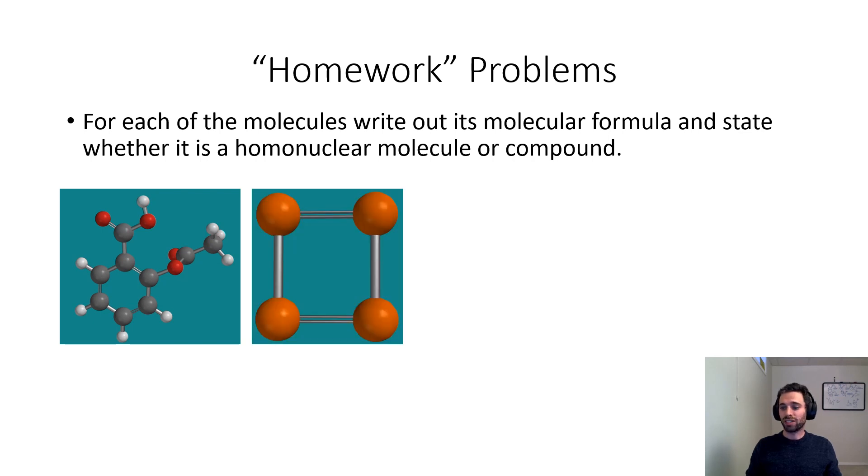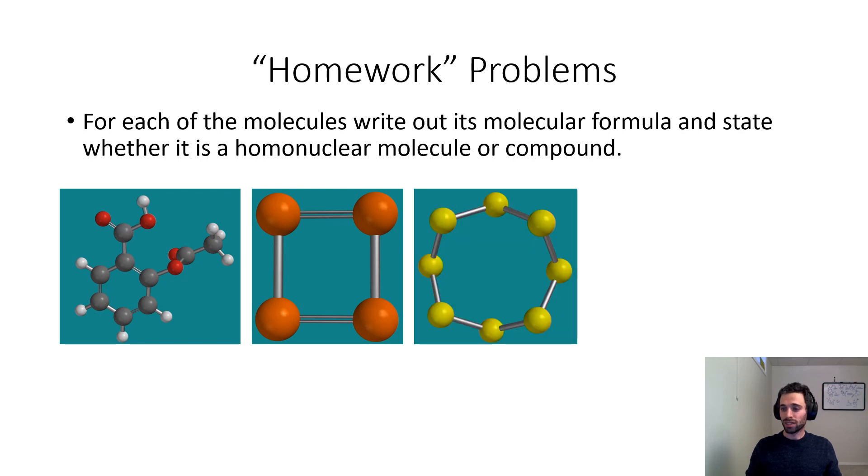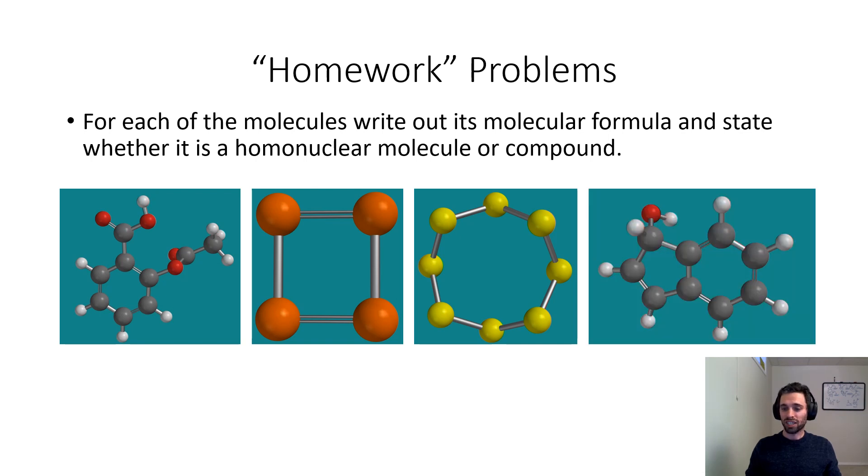In this second one, these orange atoms are phosphorus atoms, chemical symbol P. In this third one, these fluorescent green compounds that remind me of a highlighter are sulfur atoms, and you'll do the same thing for this last one. Till then, I hope you're enjoying the pursuit of knowledge.